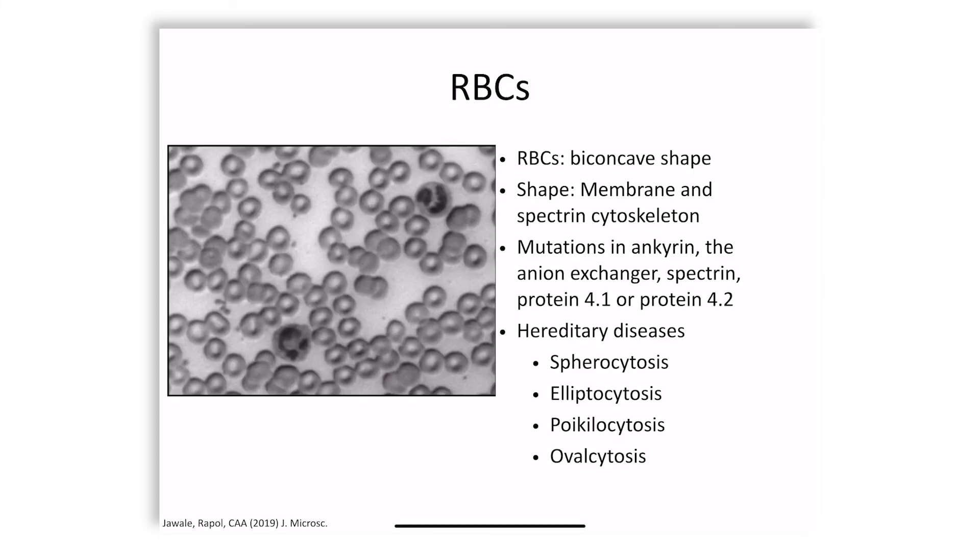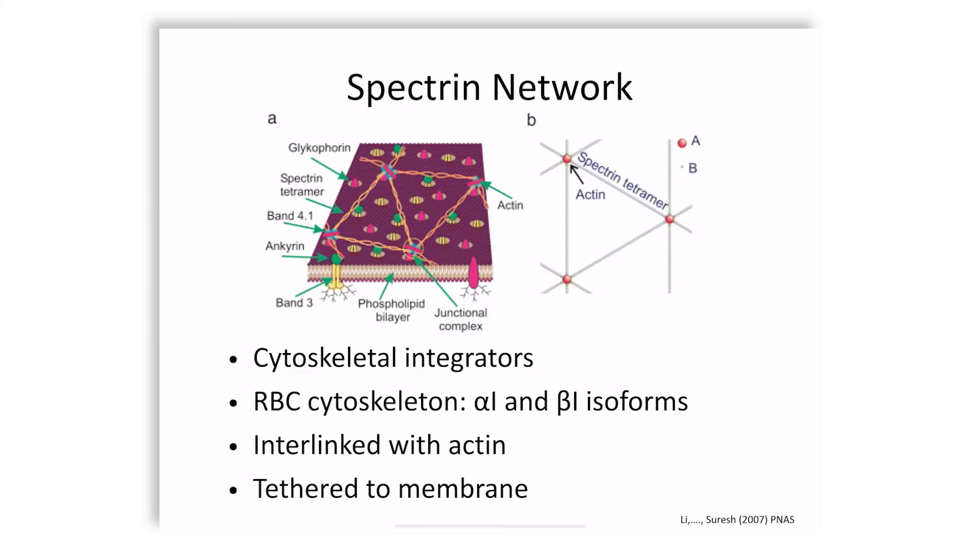In a living cell and an intact cell, all these proteins play a role. I'm just going to take an example of the fact that hereditary diseases that are involved in mutations in ankyrin, spectrin, protein 4.1 or 4.2 lead to cell-shaped defects in RBCs, which lead to diseases.